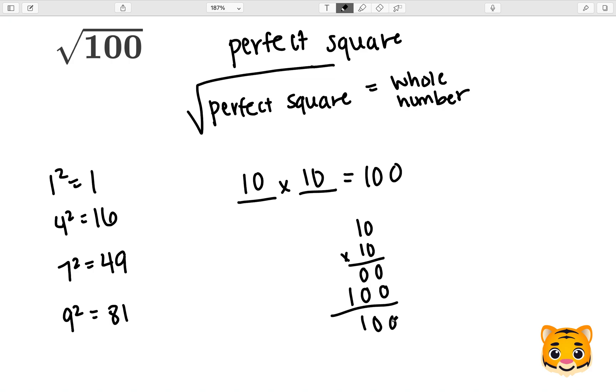As shown, we can see that 10 times 10 gives us 100. Therefore, 10 squared equals 100, and the square root of 100 would then be 10.